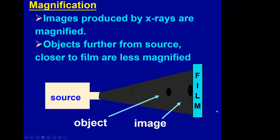Conversely, objects further from the source and close to the film are less magnified. The difference between the object and image size is much smaller in that configuration, as shown on the previous diagram.